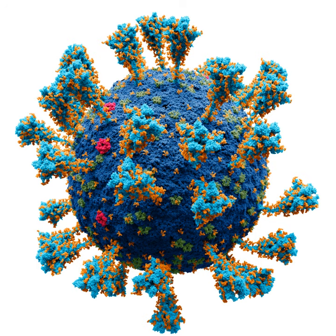6.3.4 Resistance to Bacteriophages. The major way bacteria defend themselves from bacteriophages is by producing enzymes which destroy foreign DNA. These enzymes, called restriction endonucleases, cut up the viral DNA that bacteriophages inject into bacterial cells.